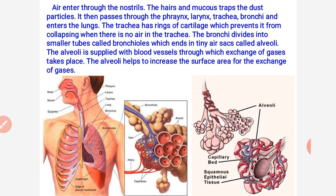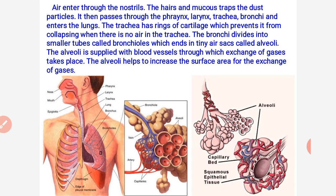Air enters through the nostrils, where hairs and mucus trap dust particles. It then passes through the pharynx, larynx, trachea, and bronchi, and enters the lungs. The trachea has rings of cartilage which prevent it from collapsing when there is no air. The bronchi divide into smaller tubes called bronchioles, which end in tiny air sacs called alveoli. The alveoli are supplied with blood vessels through which exchange of gases takes place, and they help to increase the surface area for gas exchange.